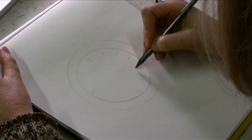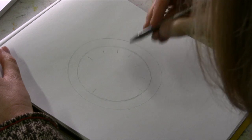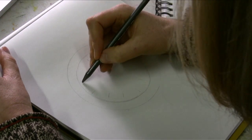So I'll draw my 12, 3, 6, and 9 first and now I'm going in and doing the numbers in between.